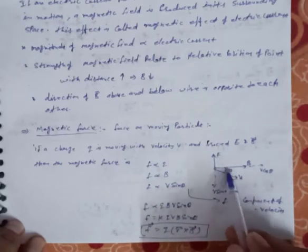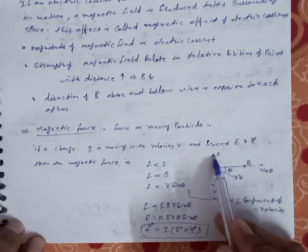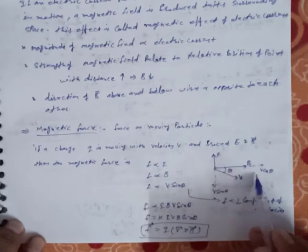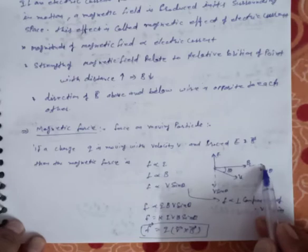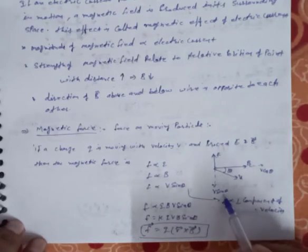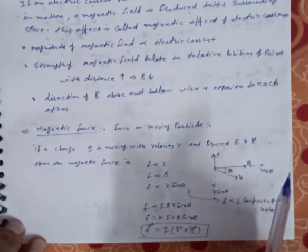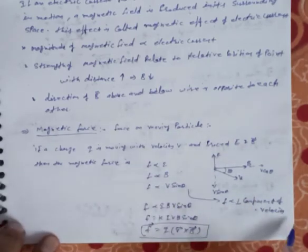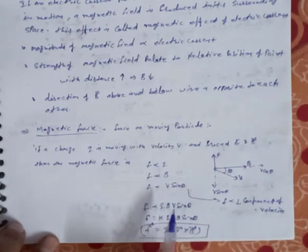The velocity v has two components: the component along the magnetic field direction is v cos θ (horizontal component), and perpendicular to it is v sin θ (vertical component). With respect to force F, the relevant component is v sin θ — that is why F is directly proportional to v sin θ.